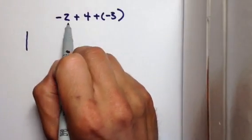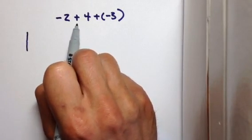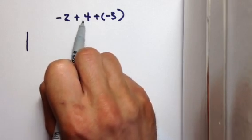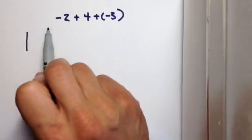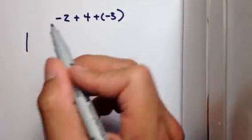Okay, in this video we're going to add and subtract more than two integers. What you do is if we're just adding and subtracting, it doesn't matter which two you start with, but we're going to work left to right.